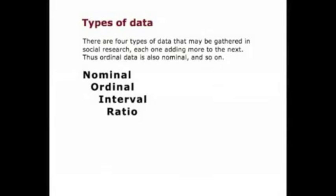For this lecture, we will begin by looking at the different types of data. There are basically four types of data that we can use in social research. The idea here is that these are not mutually exclusive. Instead, you begin with the simplest definition, and out of that simple definition — such as nominal — we find some of the data that qualify to be ordinal.